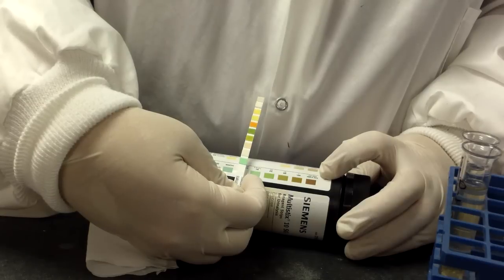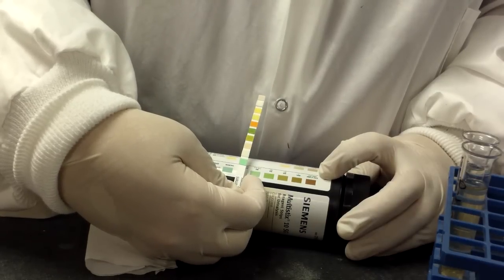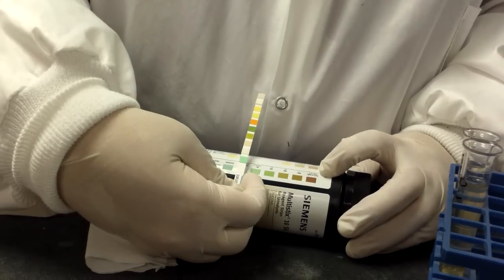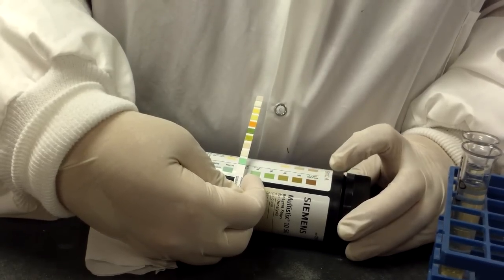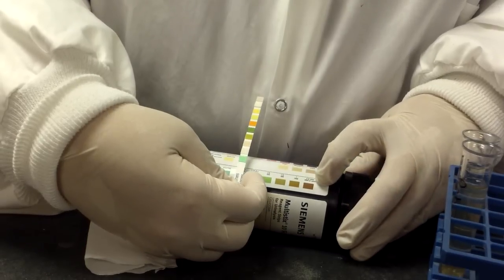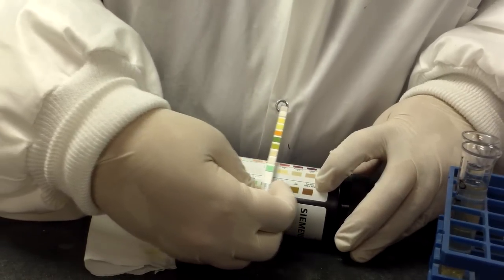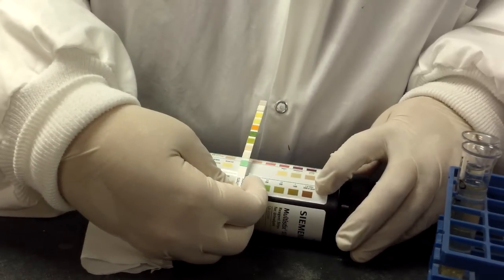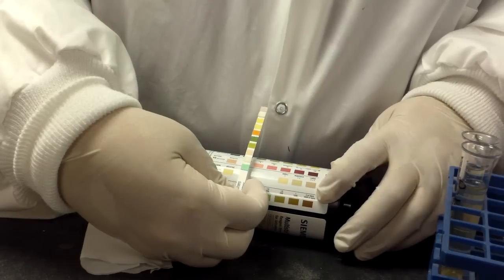There are two scales on some of these. You're going to use whichever one your instructor or your employer tells you to use. So at 30 seconds, we're going to read this one. Then we'll line up the bilirubin, which is the second one. Then we'll line up the ketones.